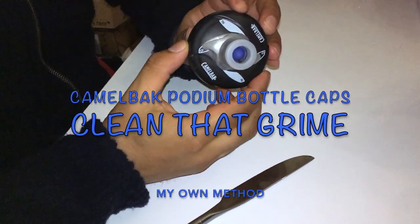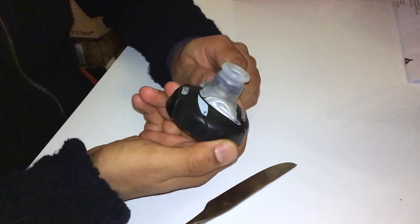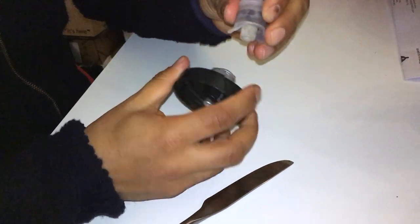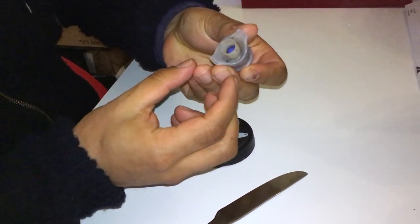So if your podium cap looks like mine and is disgusting inside, even when you pull this bit off the way the manufacturers tell you to, you still cannot get inside there because it looks like it's all sealed up.